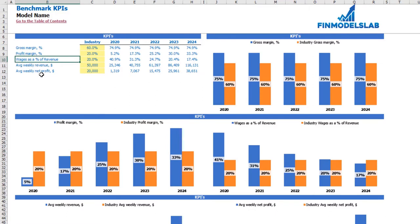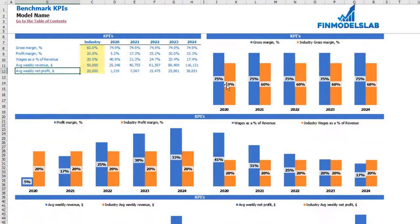For the first 2 years you may find that your profit margin is less than the industry benchmark, and starting from year 2022 you have bigger amounts than the industry benchmark. Also, you have wages as a percentage of revenue, average weekly revenue, and average weekly net profit benchmarks.